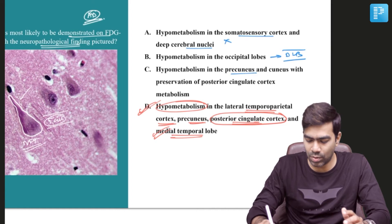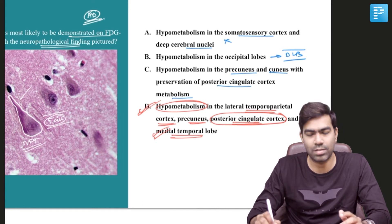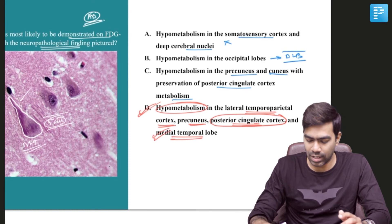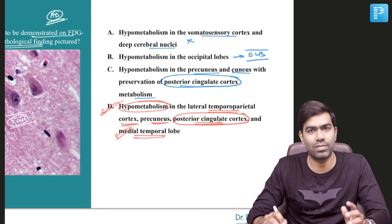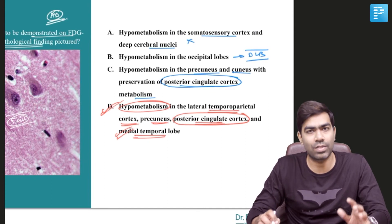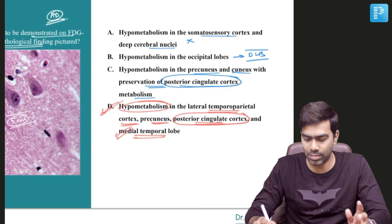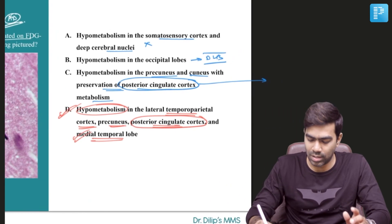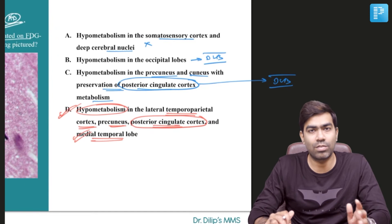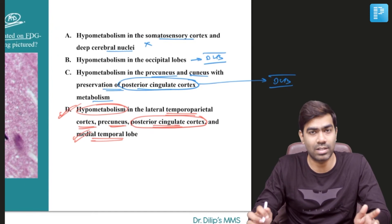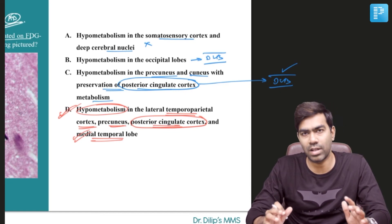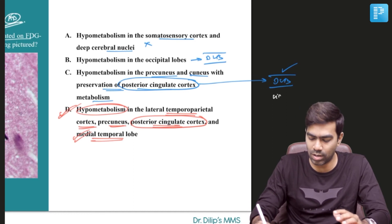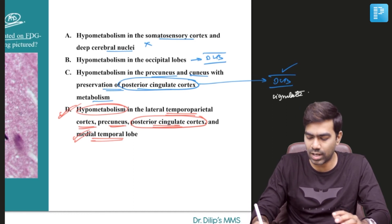Option C states hypometabolism in the precuneus and cuneus with preservation of posterior cingulate cortex metabolism. This is not consistent with Alzheimer's disease, because involvement of the posterior cingulate cortex is very common and specific for Alzheimer's. This relative sparing of the posterior cingulate cortex is consistent with dementia with Lewy bodies rather than Alzheimer's disease. This involvement of precuneus and cuneus with relative sparing of the posterior cingulate cortex is what we call the cingulate island sign.